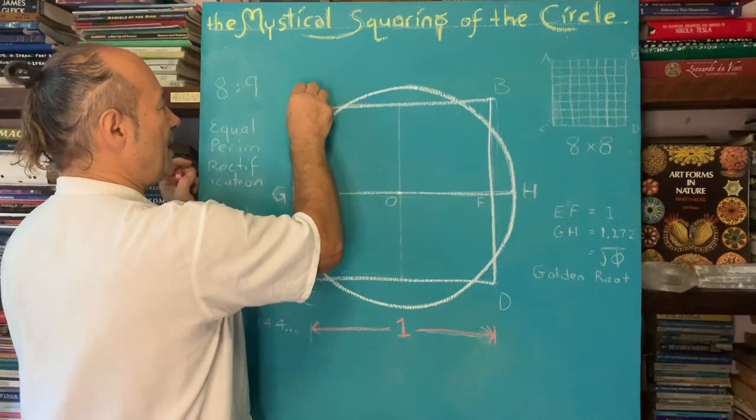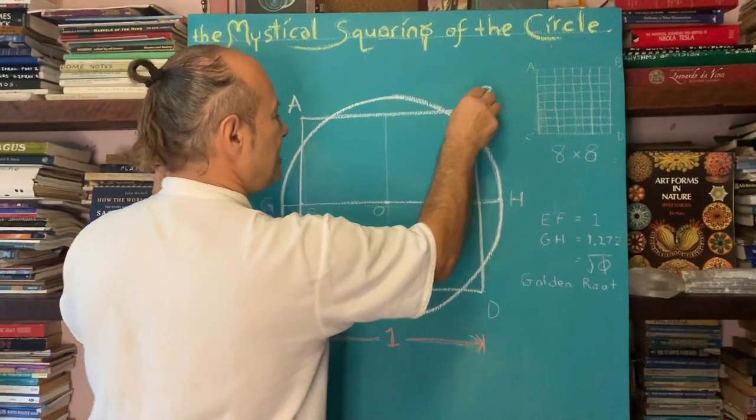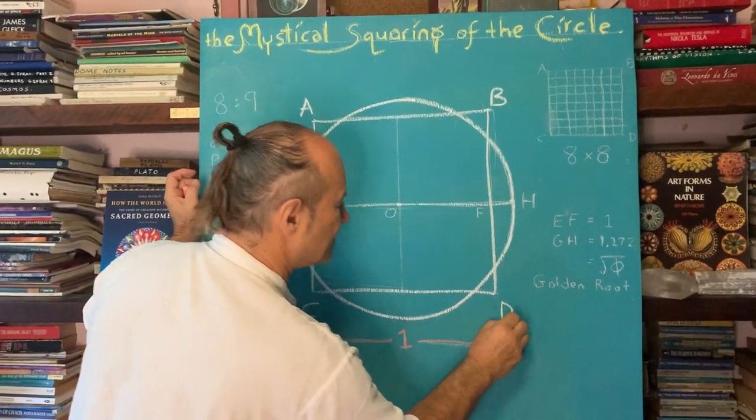So let's give them values. We'll call it A, B, C, D is the square.